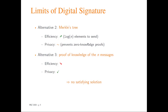If we consider different solutions such as Merkle trees, for example, this is not significantly better because we still have to send a logarithmic number of elements even to check one element. Moreover, the use of hash functions will prevent the use of efficient zero-knowledge proofs, which is a problem regarding privacy.